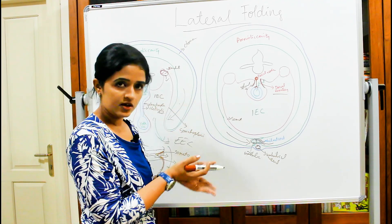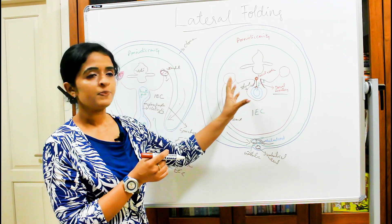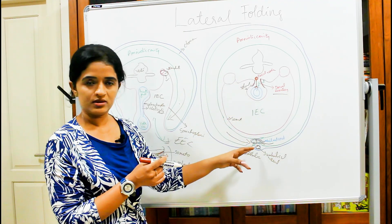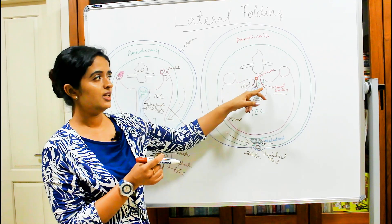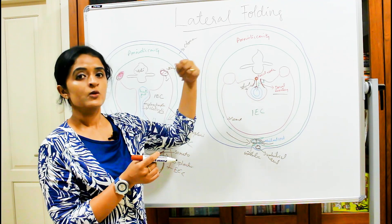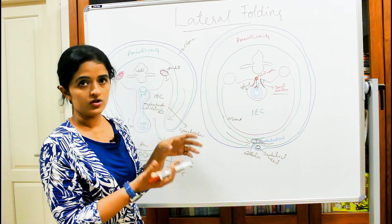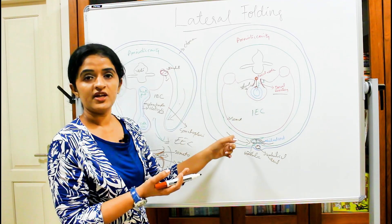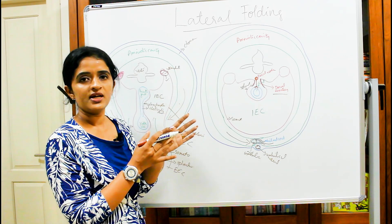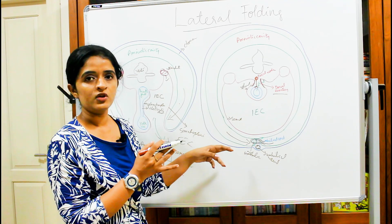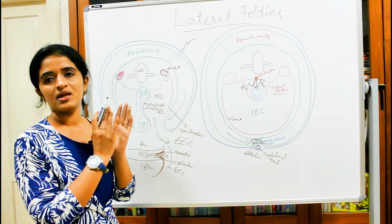To summarize the changes during lateral folding: the primitive gut gets absorbed into the embryo; the vitelointestinal duct connection is lost; a single intra-embryonic coelom forms; the mesoderm is modified as a dorsal mesentery which suspends the primitive gut tube and carries blood vessels into it; the amniotic cavity develops all around the embryo so the embryo floats within it; and the chorionic cavity disappears as the amniotic cavity enlarges.